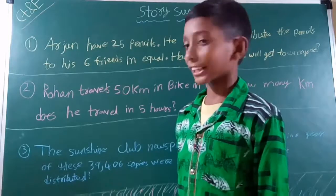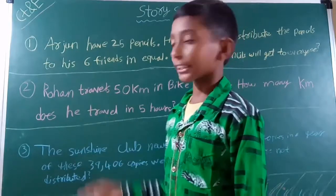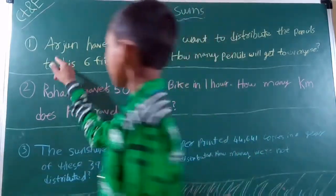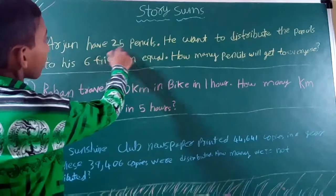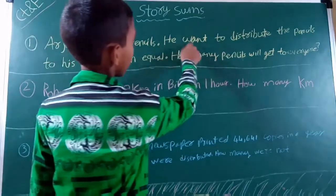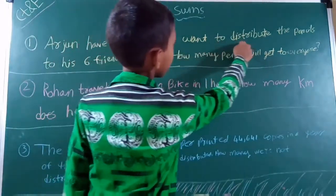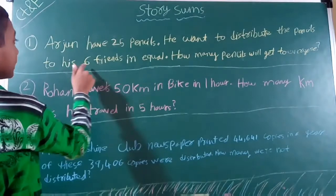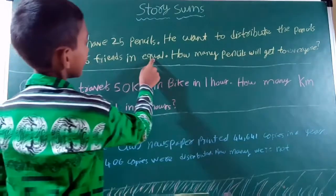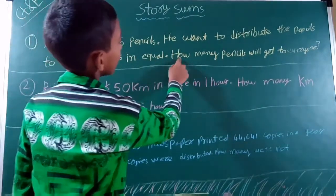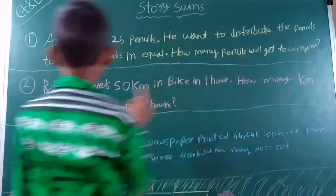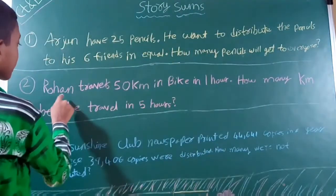First, I will read all 3 questions. First question: Arjun has 24 pencils. He wants to distribute the pencils to his 6 friends equally. How many pencils will each person get? Second question: